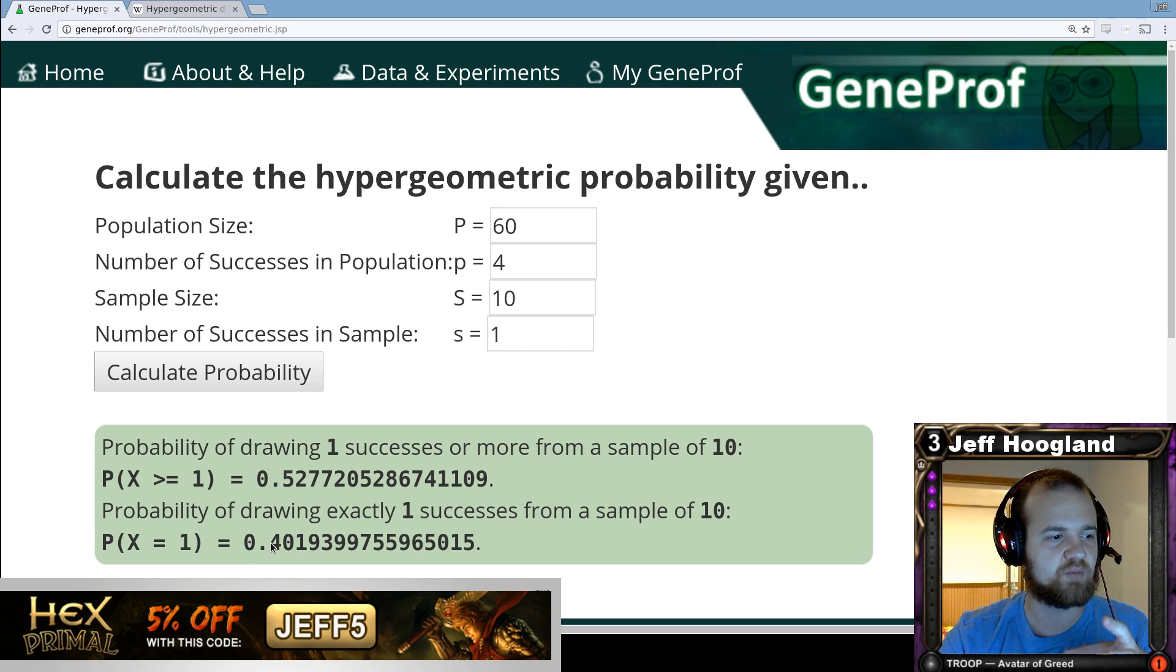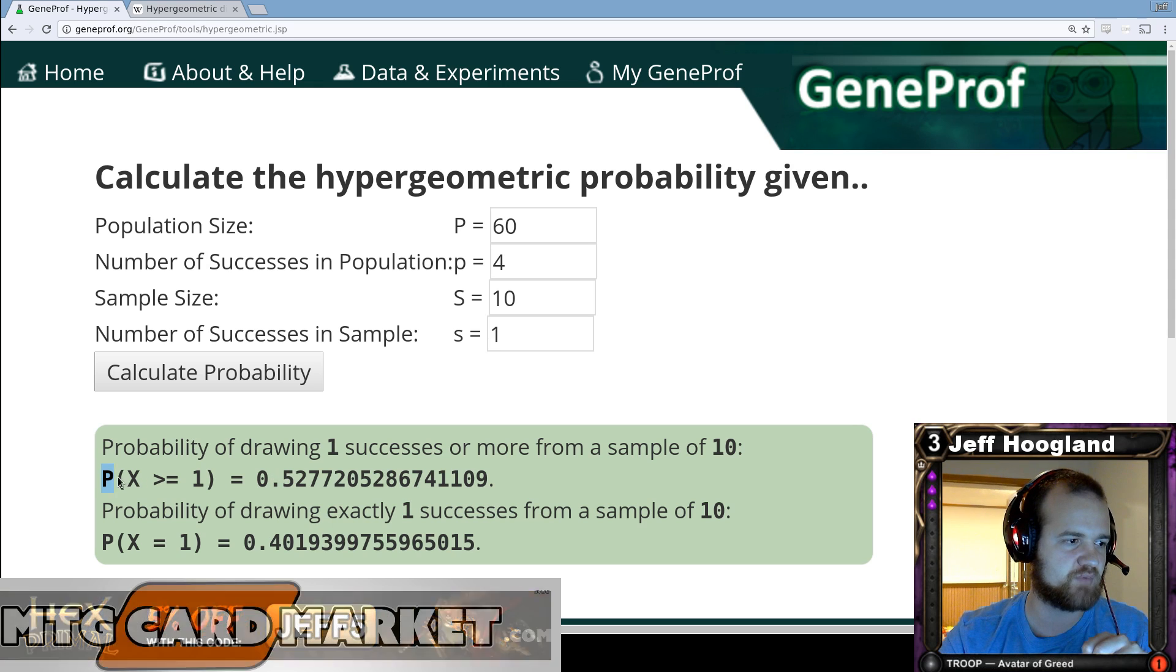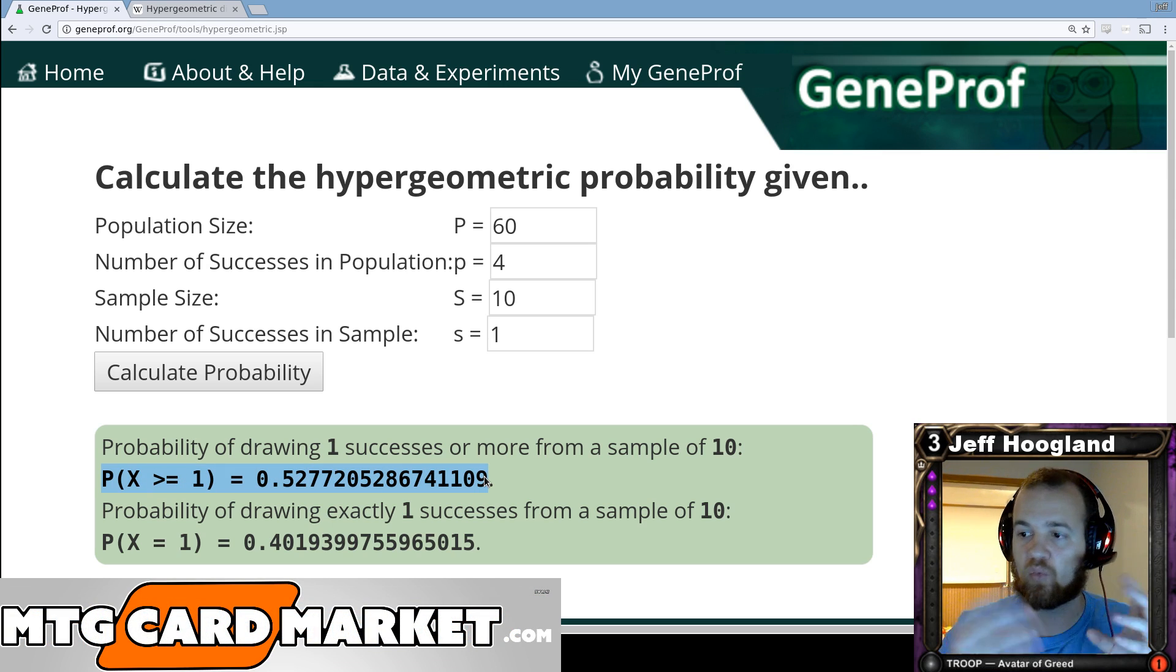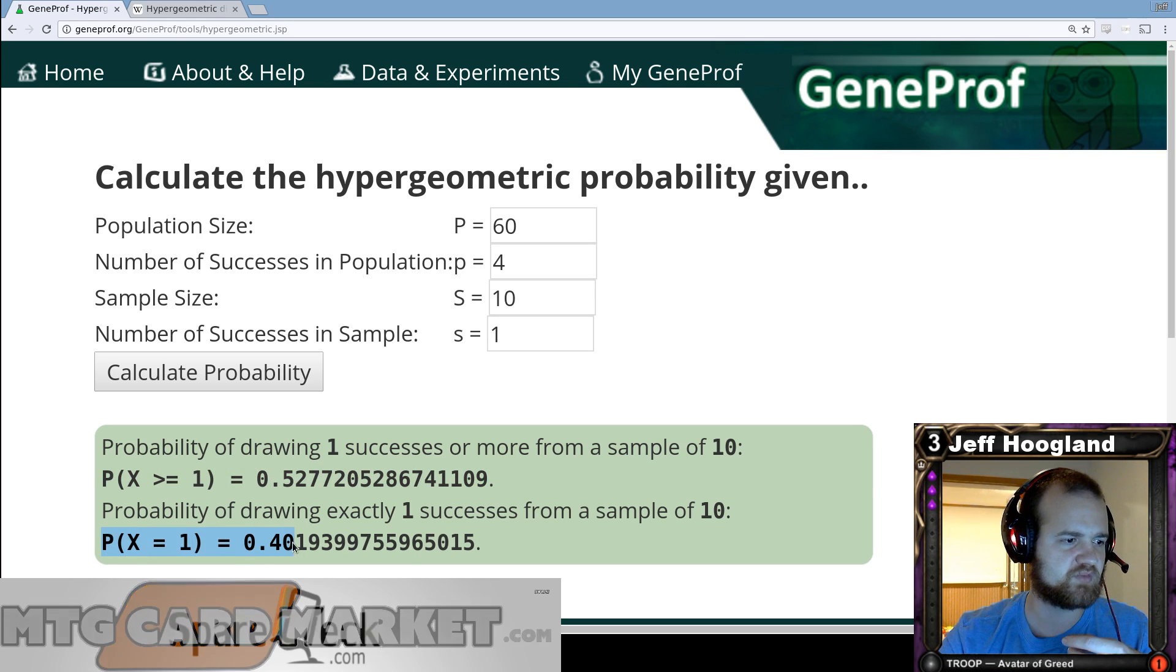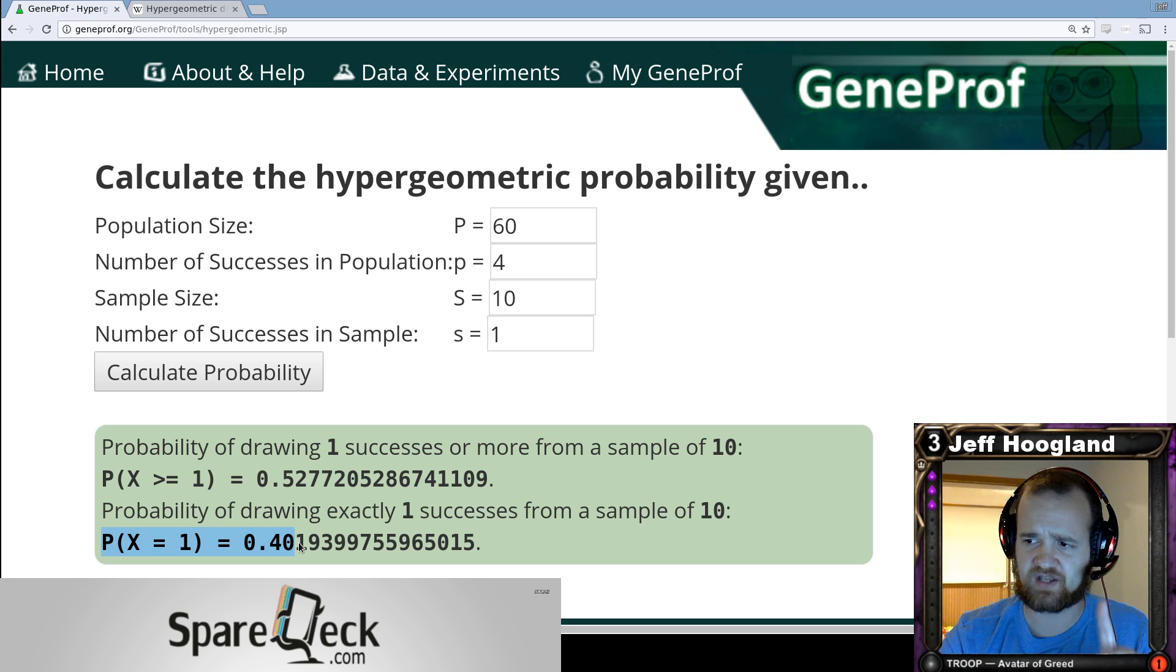The second number here is one that usually we're not interested in as much in TCGs, but it's the probability of drawing exactly one copy. So this probability calculates if we draw one, two, three, or even all four of our four-ofs by that fourth turn. And then this talks about drawing exactly one copy.